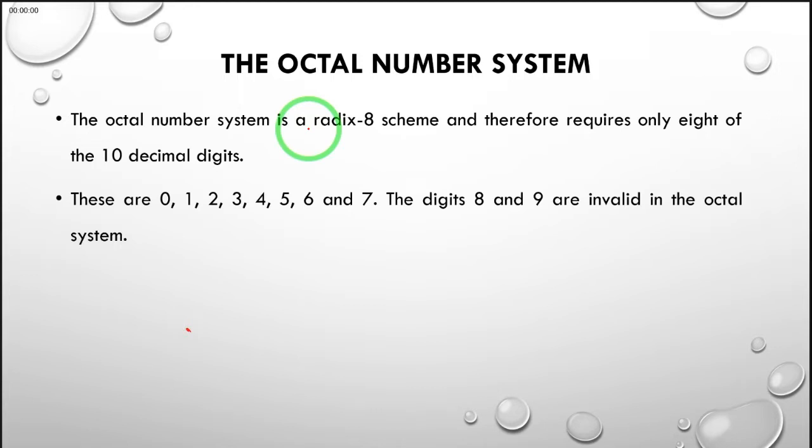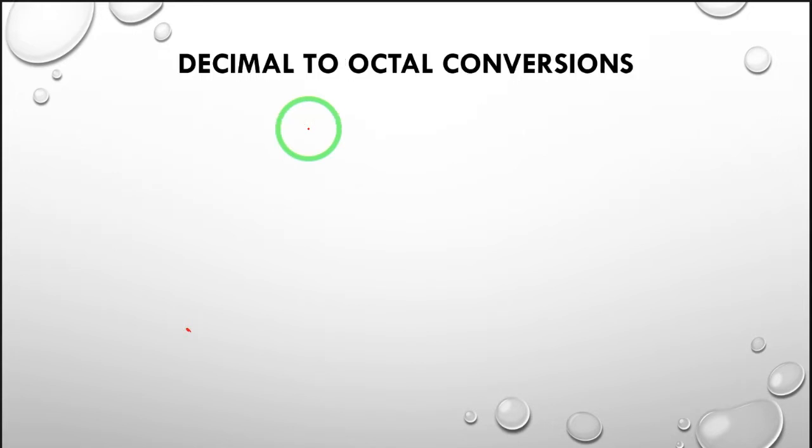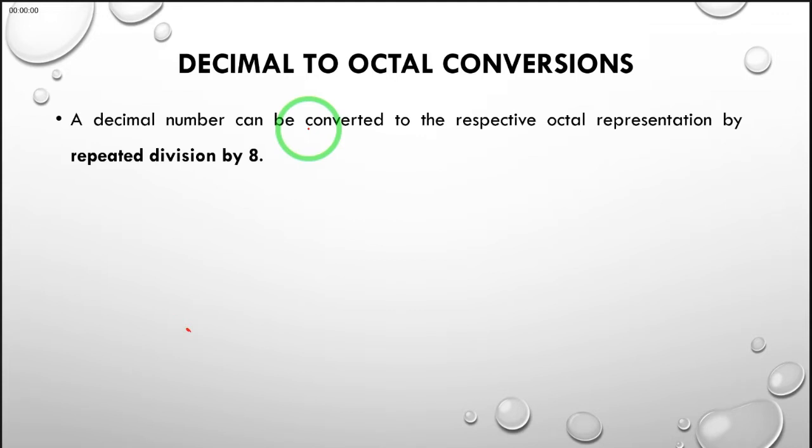For us to understand this number system better, we can convert a decimal number to become an octal number by repeated division by 8. Remember that we were able to obtain binary numbers by repeated division by 2, so that is a similarity.